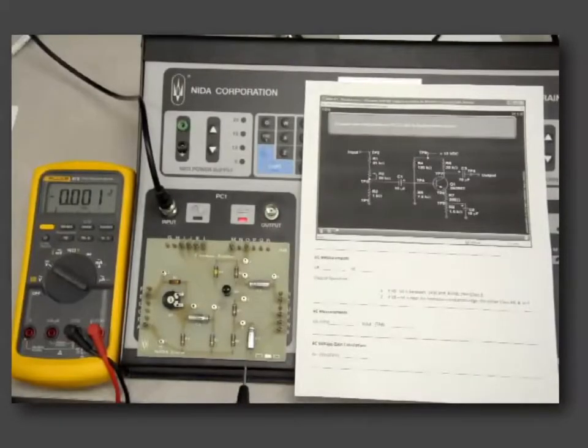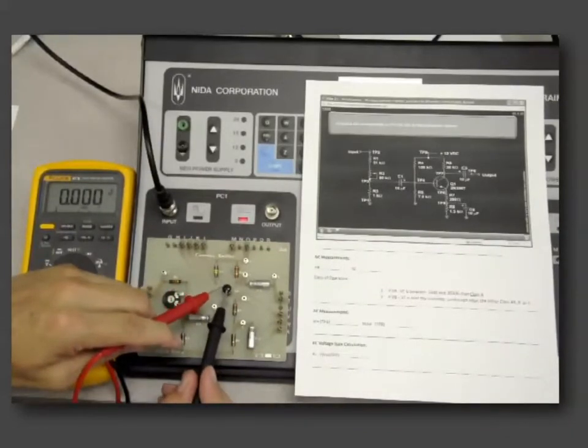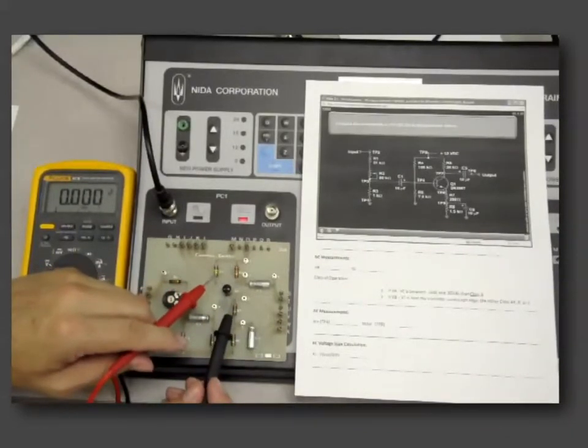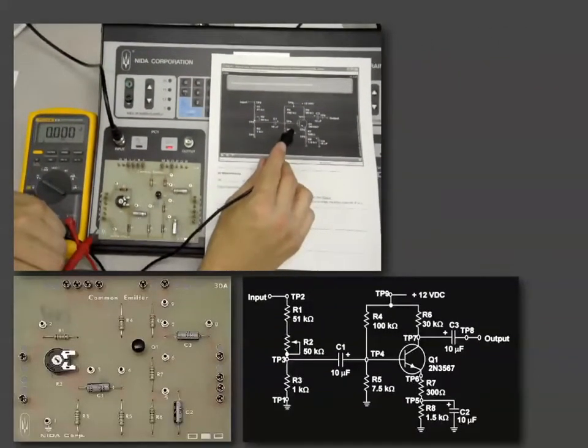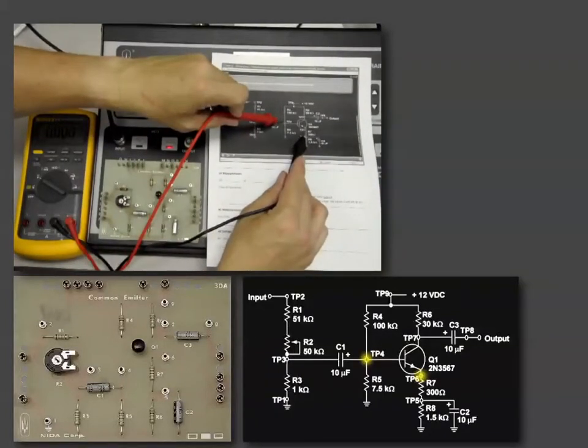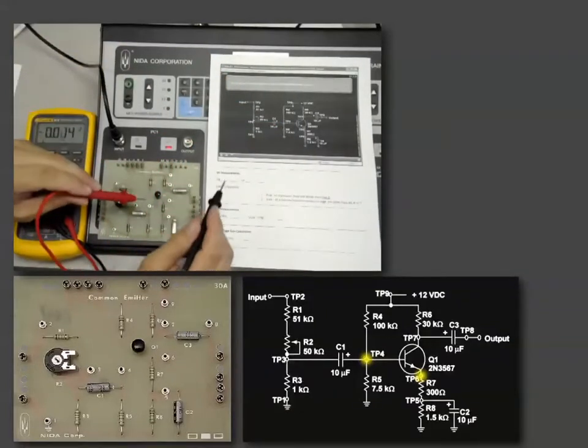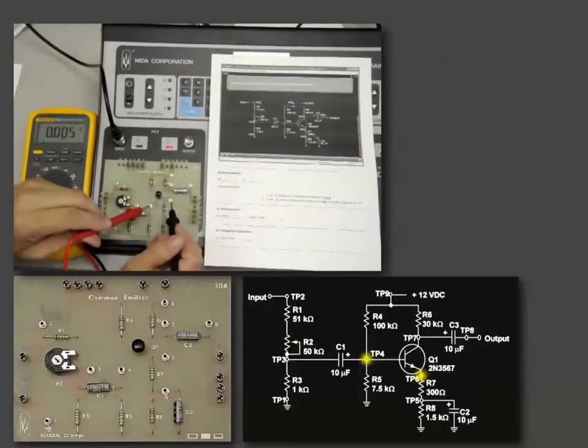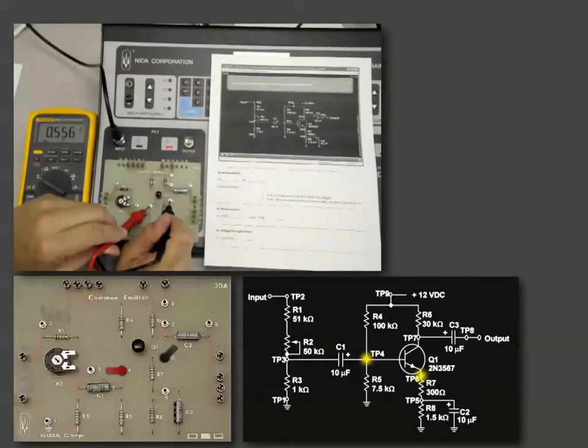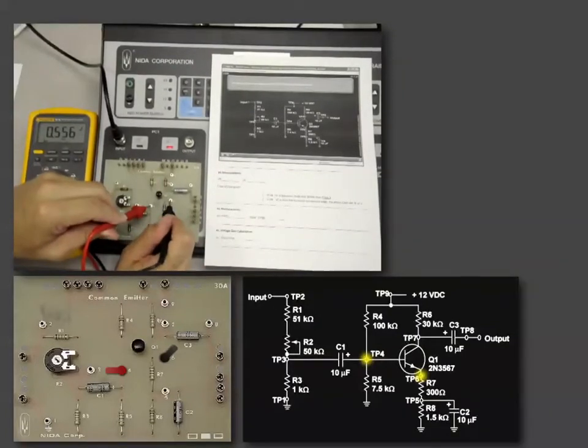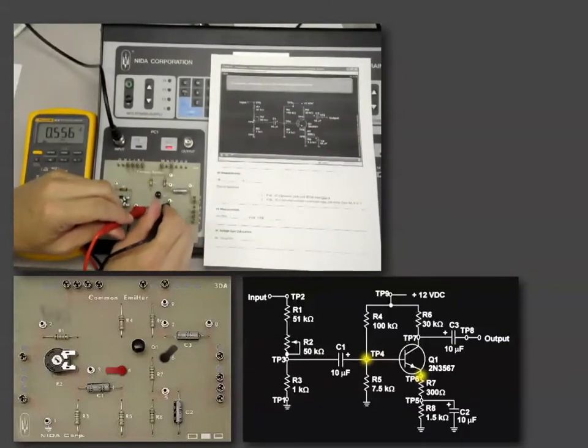Again, if you don't want to do the calculations or the subtractions using the calculator, we could just take the probes and actually measure directly across the junction, the base emitter junction. So we could go from test point four with the red leads, since it's an NPN transistor, and the black lead would go to test point six, and that should be around the point five five six that we calculated. So test point four is the red lead, and we get point five five six volts, which is what we calculated. So that would be an easier method if you don't want to do the subtractions. And again, we think that this would be class A operation.